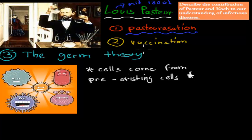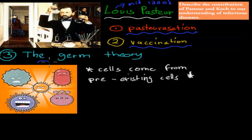He also helped develop vaccinations, which are obviously very important nowadays. But his main contribution - especially the one we have to look at in this video - is his contribution to the germ theory, because he came up with the idea that cells have to come from pre-existing cells.